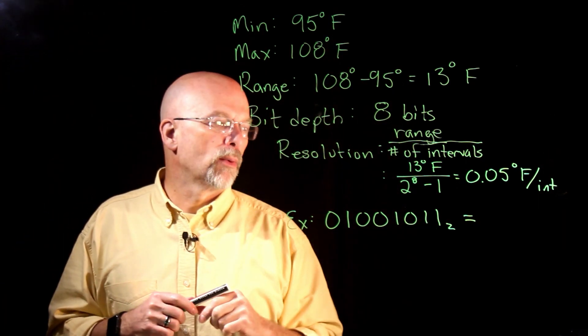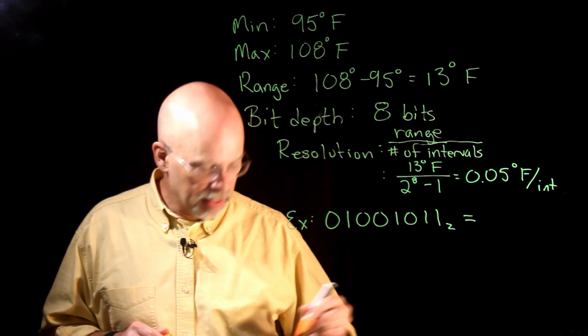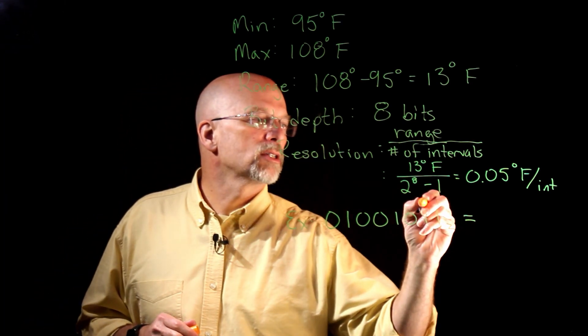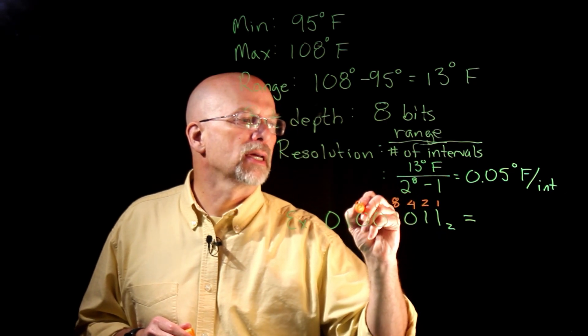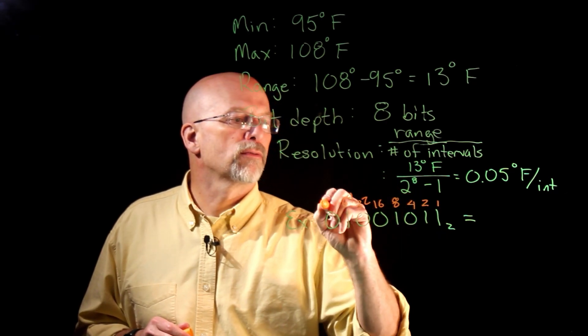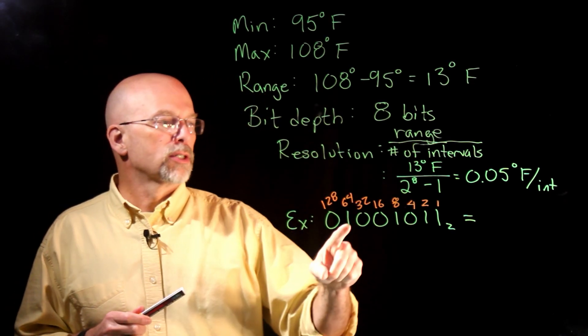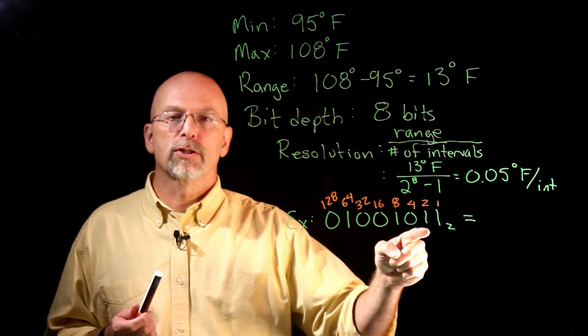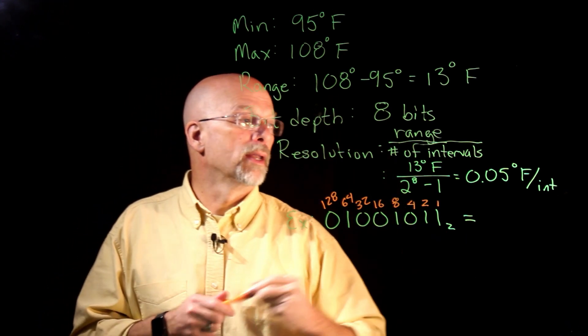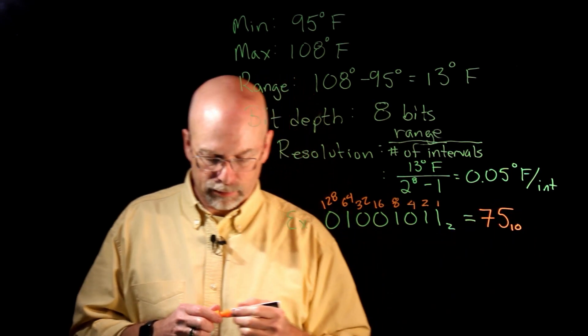This value is just an identifier as to how many increments up we have counted from our base of 95. We need to figure out what this is in decimal. This is just like unsigned binary. So this is the ones place, the twos place, 4, 8, 16, 32, 64, 128. So our value is 64 plus 8, that's 72, plus 2, 74, plus 1. This is 75 base 10.